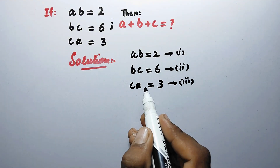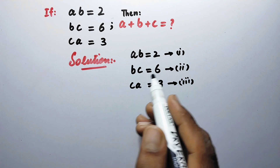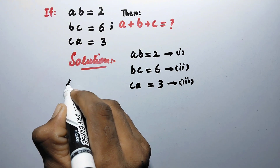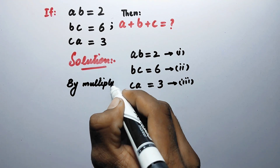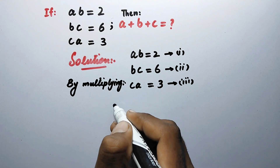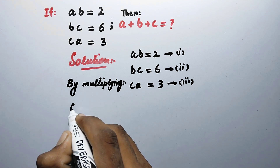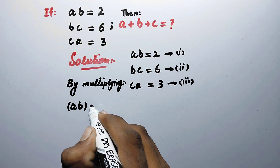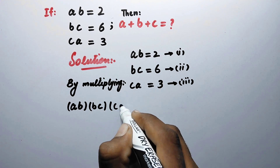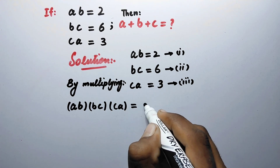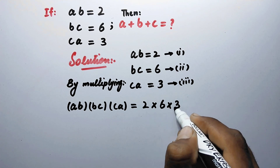So now, to get our desired answer we will multiply all these equations. By multiplying equation number 1, 2, and 3, here we can write: a·b times b·c times c·a is equal to 2 times 6 times 3.